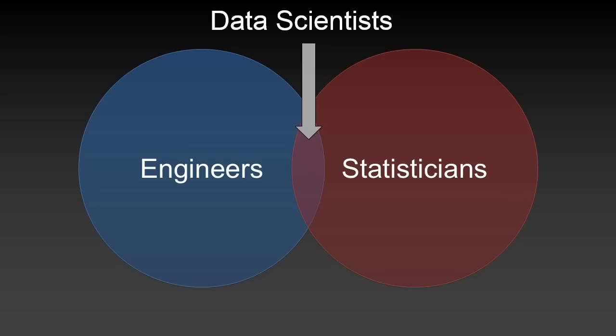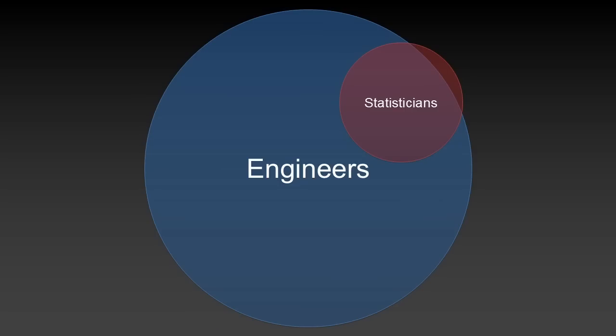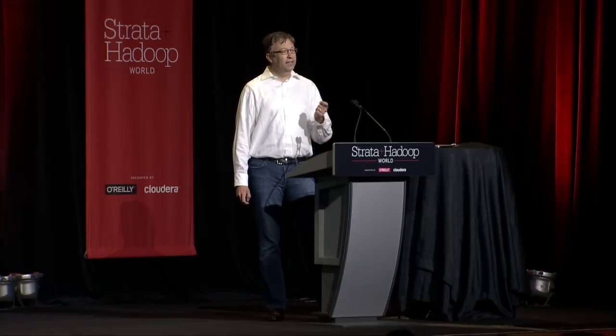There are two kinds of technical people in this audience: the software engineers and the statisticians. At Strata and in general, the engineers are by far the larger group. In this room, maybe this picture looks more like this — there are probably few statisticians in this room that would not also self-identify as data scientists. And I think that many of the engineers look with some envy on the people that know statistics.